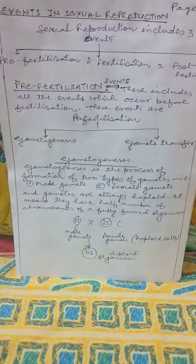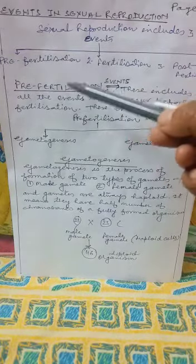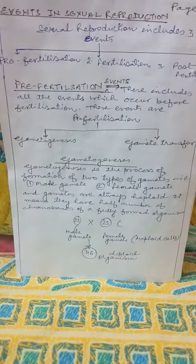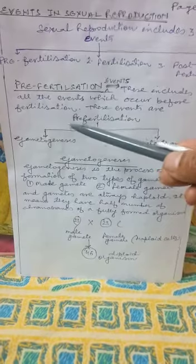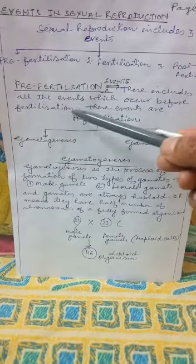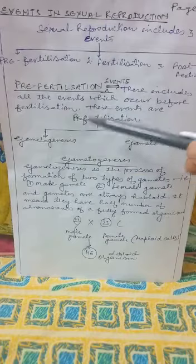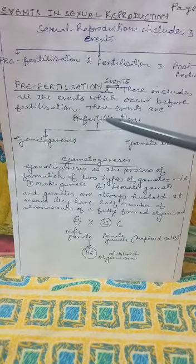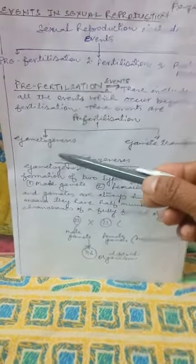Hello children, today I am starting with the topic of events in sexual reproduction. Sexual reproduction includes three events: first is pre-fertilization, second is fertilization, and third is post-fertilization. Pre-fertilization events include all the events which occur before fertilization — that is, before the fusion of male and female gametes. Pre-fertilization events are again divided into two events.